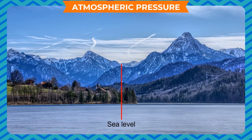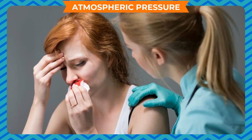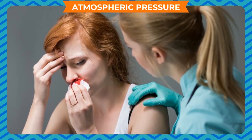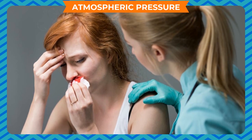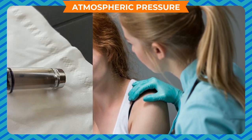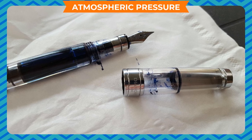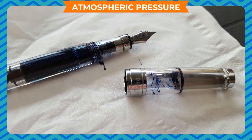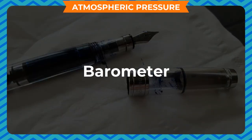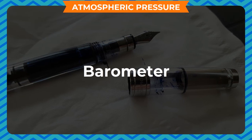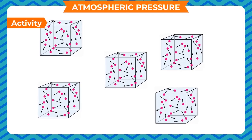On higher altitudes, the atmospheric pressure reduces. However, the blood pressure remains the same. It is for this reason that blood may start flowing out through the nose and the problem of nosebleeding starts. Fountain pens also start leaking at higher altitudes. Atmospheric pressure is measured using a barometer.